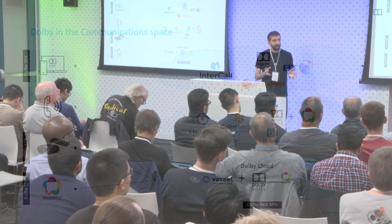We've now actually started providing a service ourselves. We have a service with APIs which you can use to build your own Dolby-powered conferencing service. It's called VoxEat, and the aim is to give all developers access to the underlying voice technology that we use with service providers, as well as some of the voice and video technology from the wider Dolby entertainment business. We've got a lot of cool stuff in DSP.